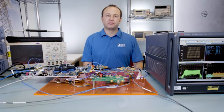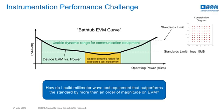We will use EVM as a performance metric in today's discussion. EVM is an RMS average of error vectors for each received symbol compared to their ideal location. Radio devices have a bathtub EVM curve as shown in this picture. This curve shows a usable dynamic range for the device with respect to the operating power. However, instrumentation solutions usually target an order of magnitude lower EVM than most of the standard limits. If we apply this limit to the same device, we see that the usable range for the device gets reduced.